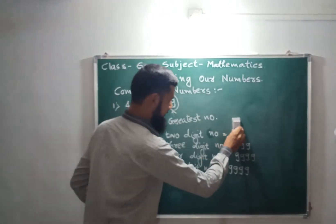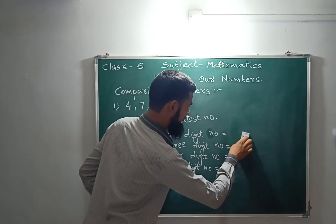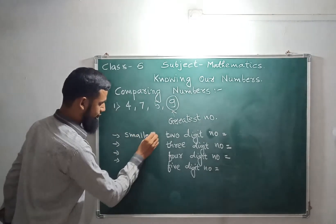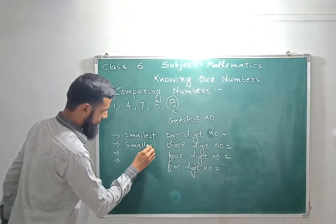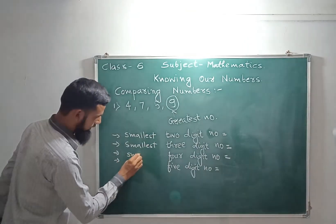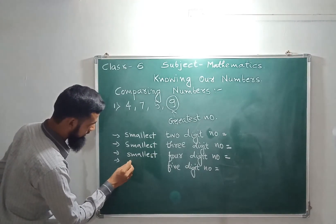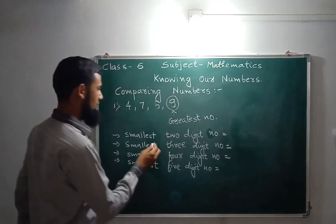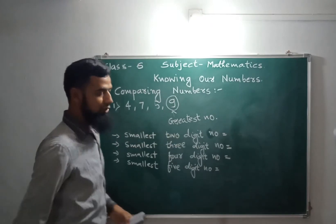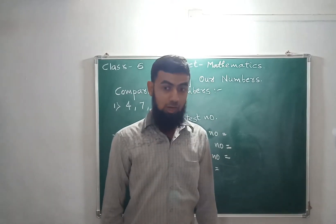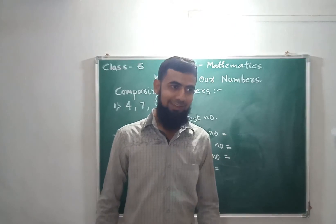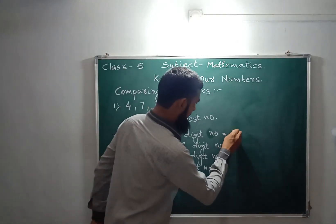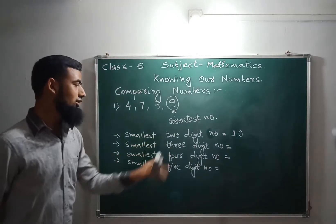Now I am changing to smallest numbers. Smallest two-digit number, smallest four-digit number, smallest five-digit number — tell me. The digits 0 to 9 are one-digit numbers, so 10 is the smallest two-digit number.